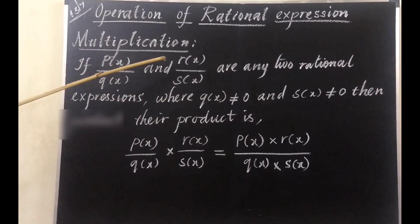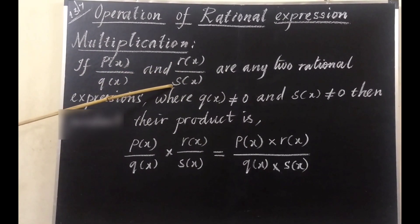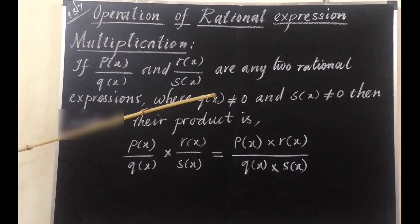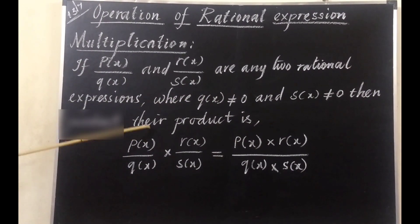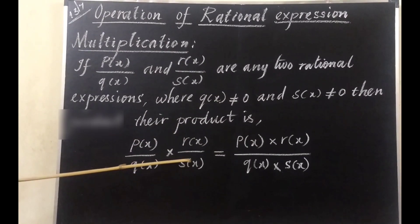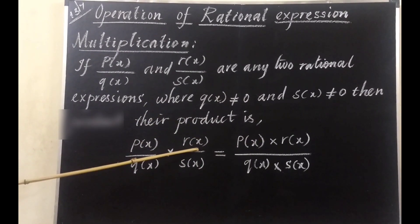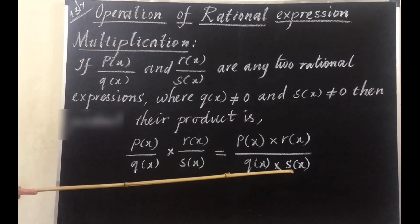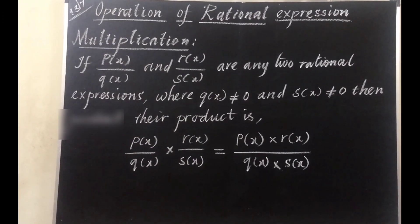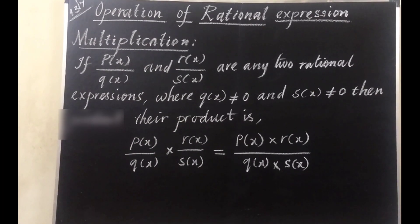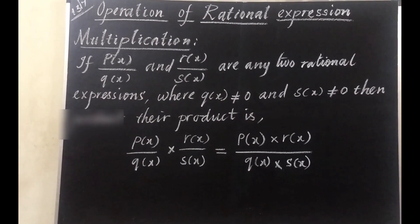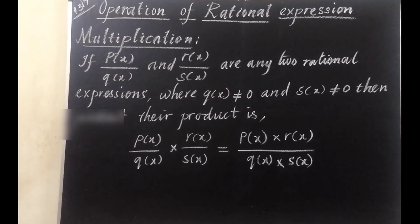Let p(x)/q(x) and r(x)/s(x) be any two rational expressions, where q(x) ≠ 0 and s(x) ≠ 0. Then their product is p(x)/q(x) × r(x)/s(x) = p(x)·r(x) / q(x)·s(x). If it can be simplified, we simplify first and then multiply the remaining terms. Multiplication is very simple: multiply numerator by numerator and denominator by denominator, canceling common factors where possible.